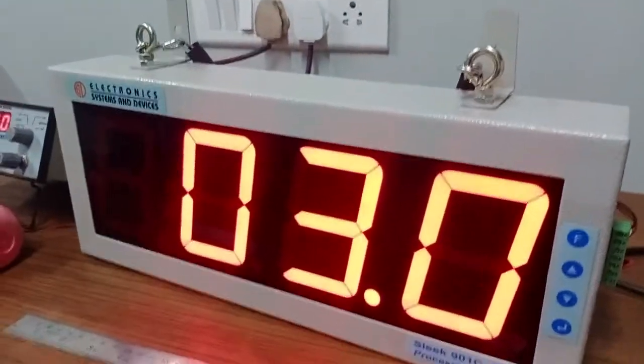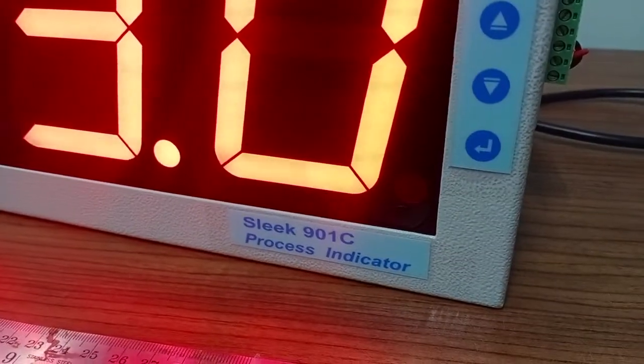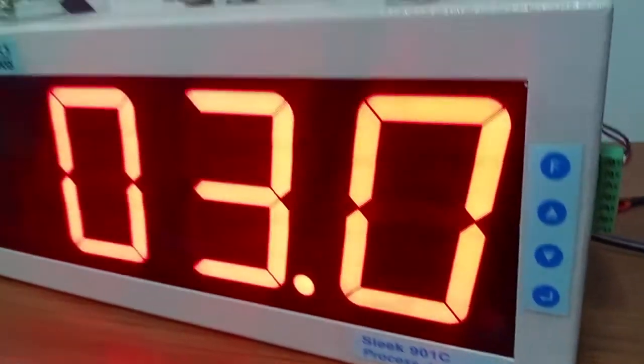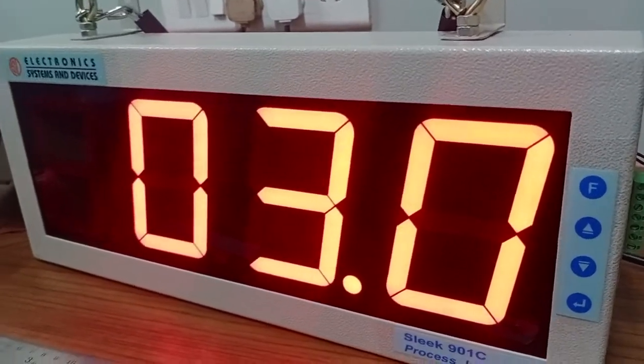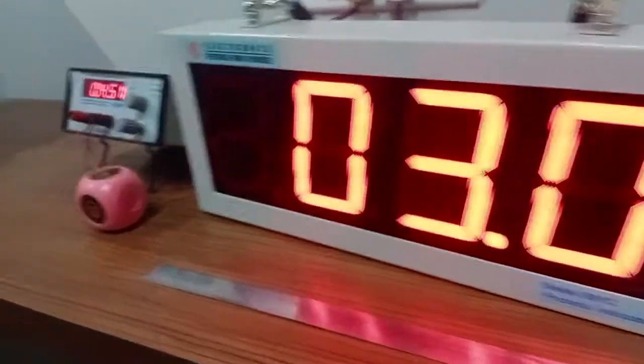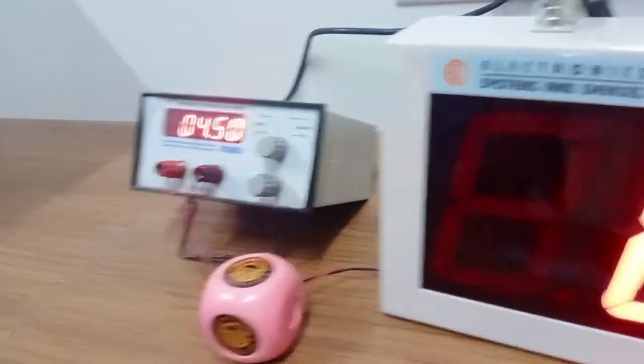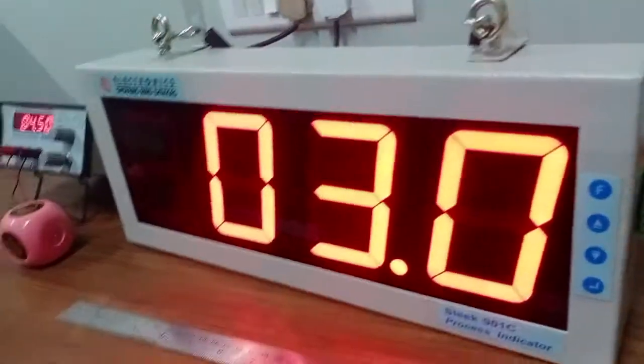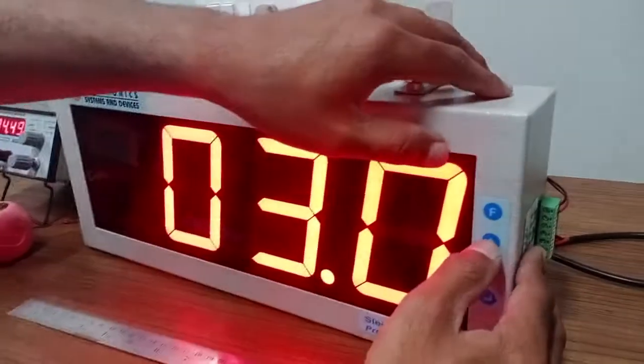Hello, welcome to product demonstration. This is ESD901C process indicator. This is a 4-inch jumbo display - the height of the display is 4 inches. We are using a milliamp simulator to feed the input to it. Now we will go through the settings mode.